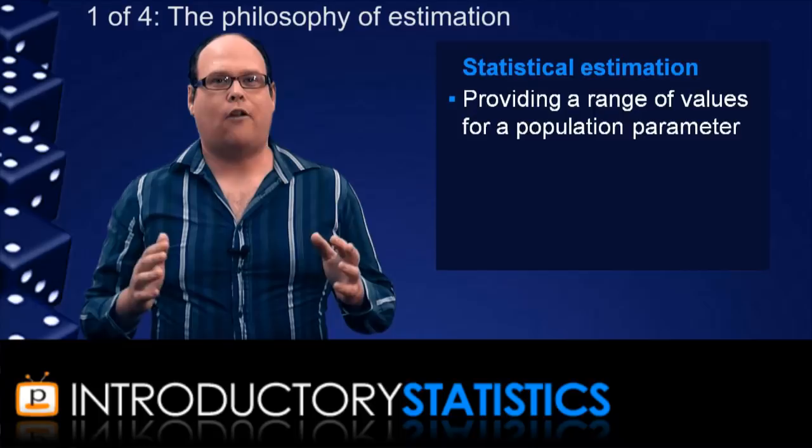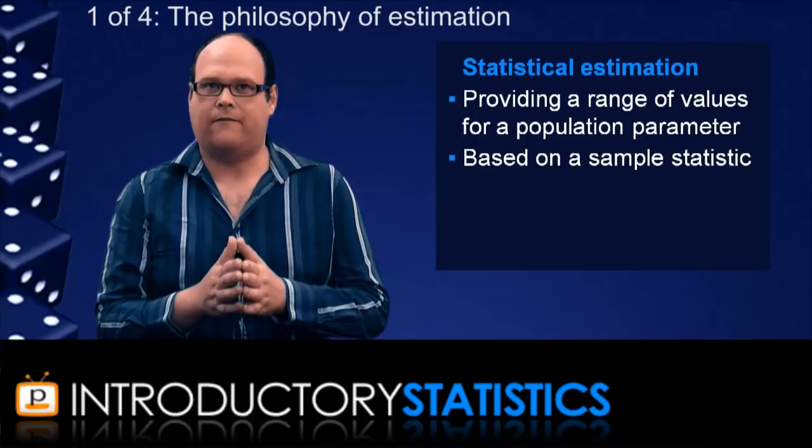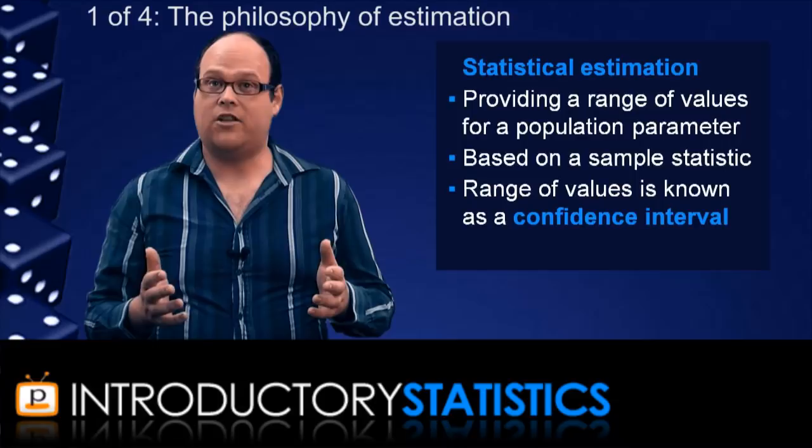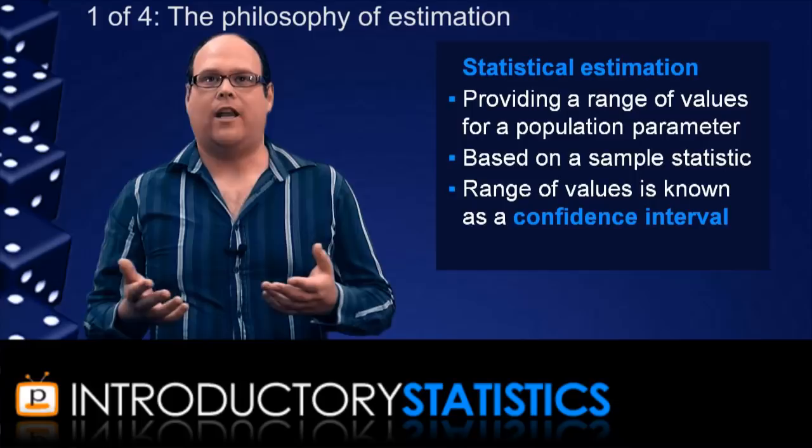When we estimate, that basically means we are providing a range of potential values for a population parameter based on a single value that we've measured for a sample statistic. This range of values is known as a confidence interval. And as the name suggests, we have some level of confidence that the population parameter is in the interval we end up constructing.